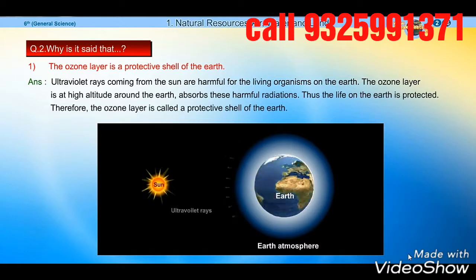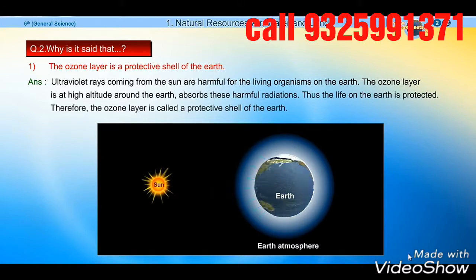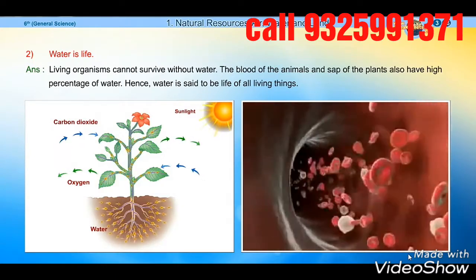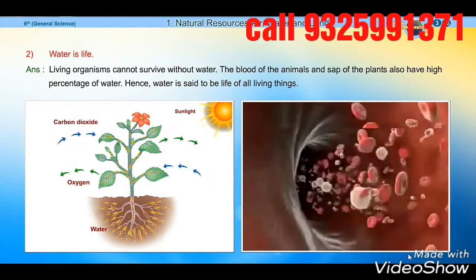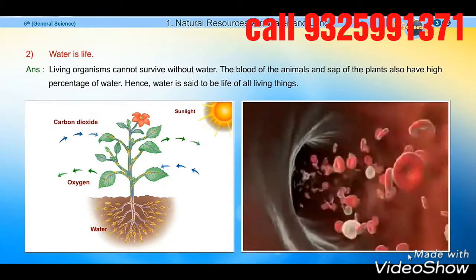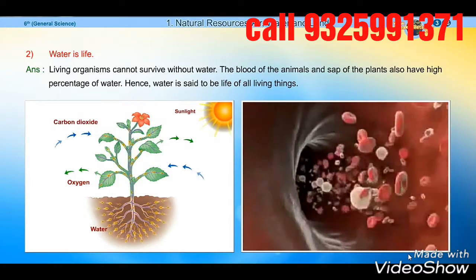Ultraviolet rays coming from the sun are harmful for the living organisms on the earth. The ozone layer is at high altitude around the earth and absorbs these harmful radiation.